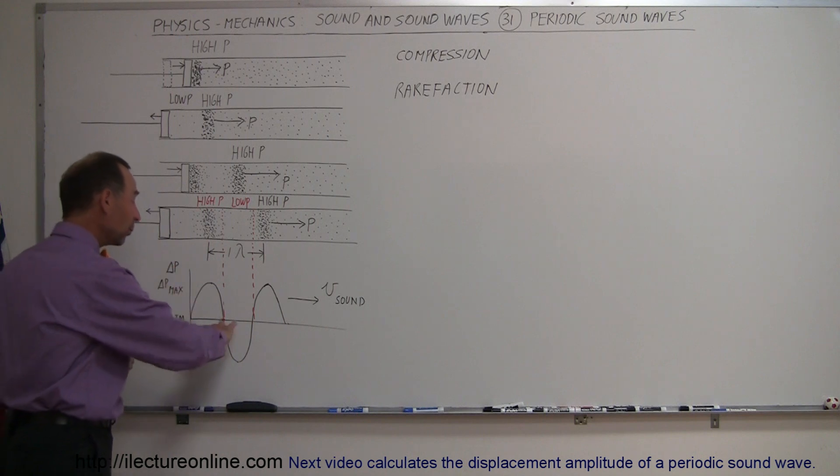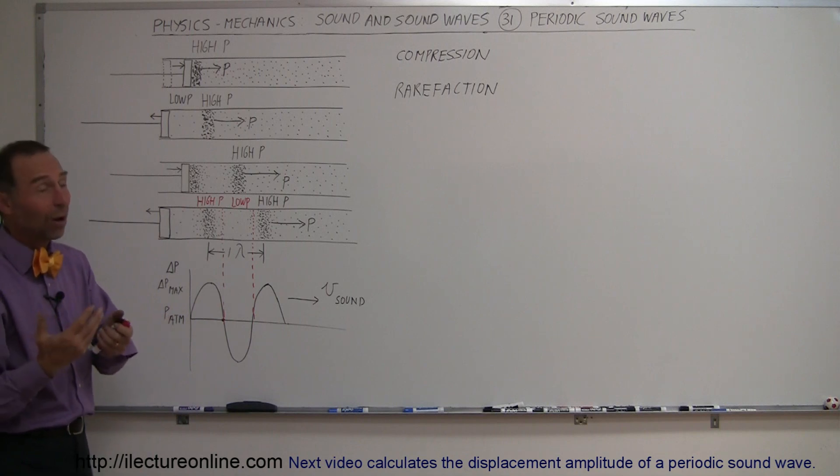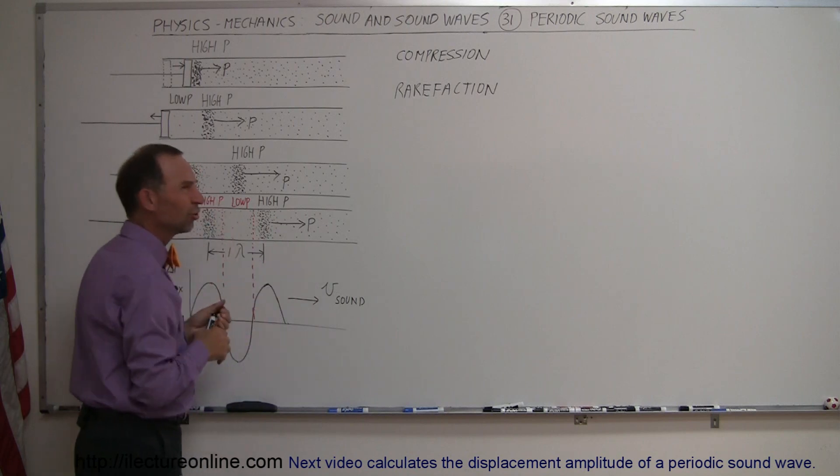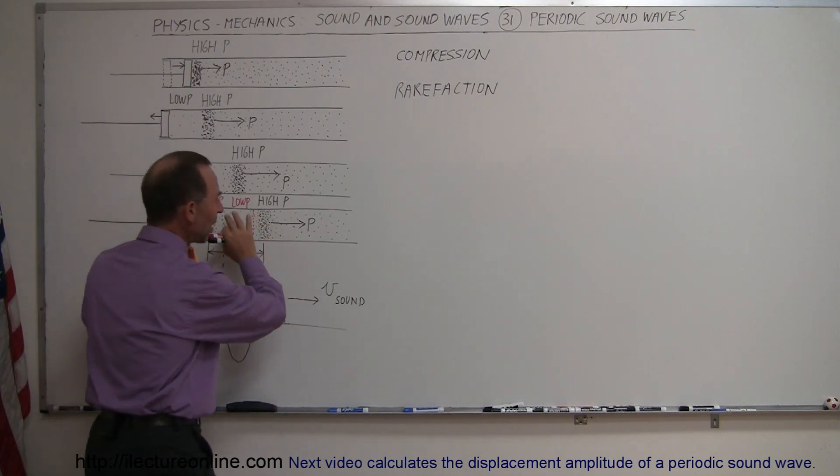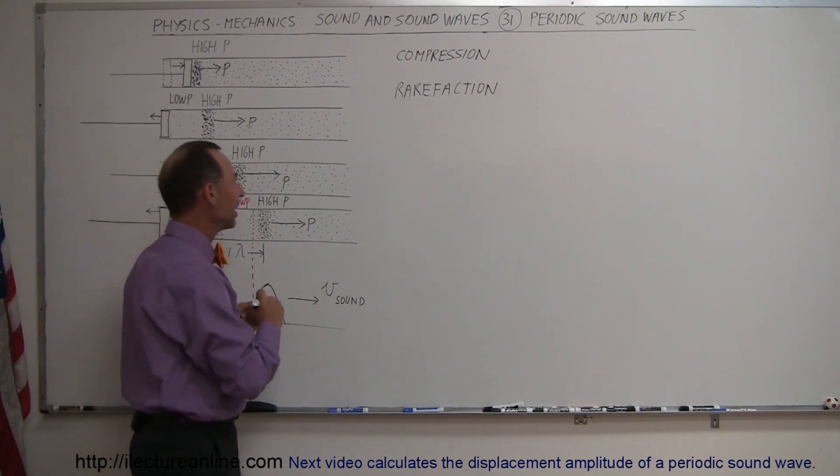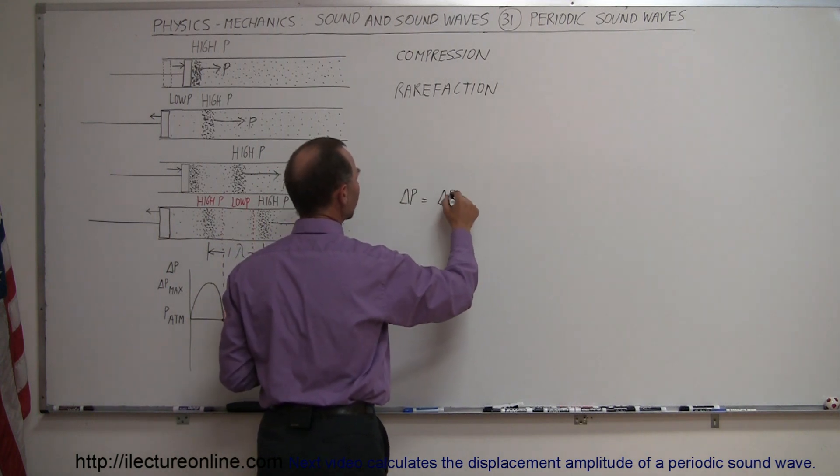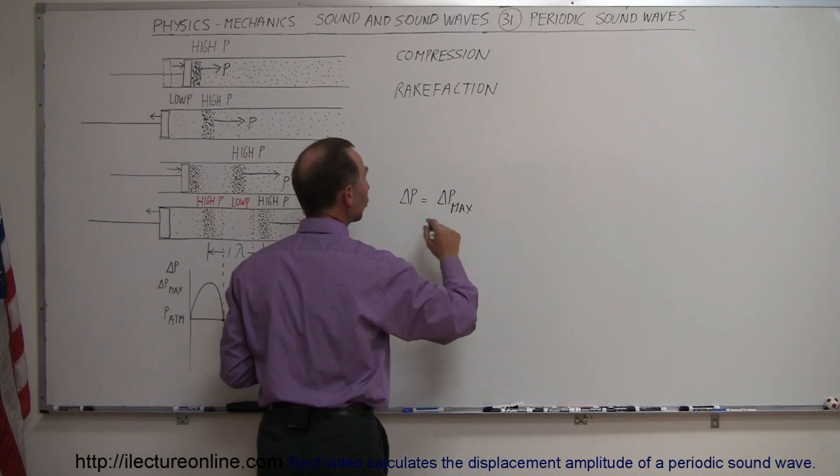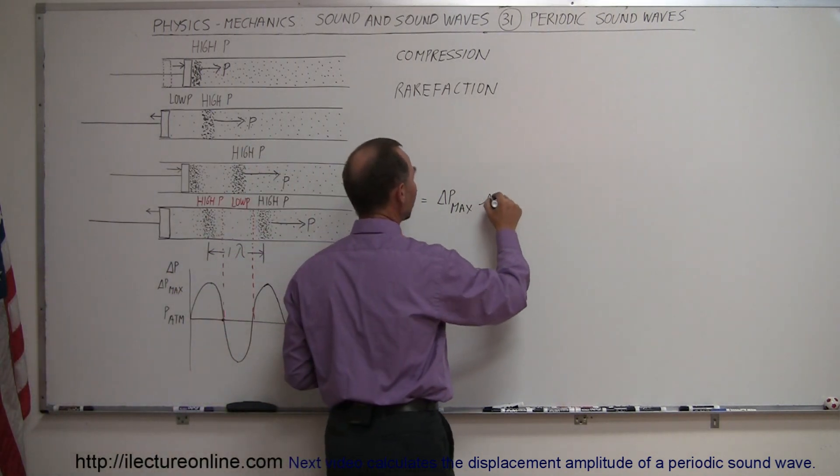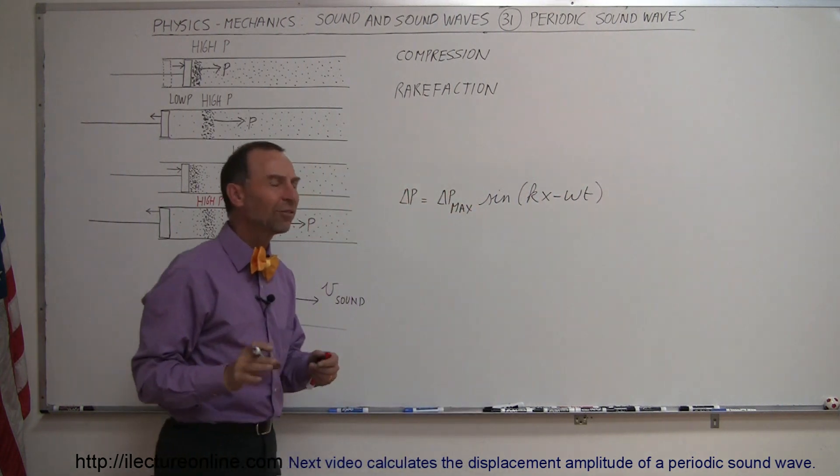Since we can represent the changes in the pressure in the air, which is essentially what a sound wave is—a pressure wave or sets of pressure waves, a set of compressions within the waves moving to the right—we can express that as a function. We can say that the change in the pressure is equal to the maximum pressure, the maximum amplitude, times the sine of kx minus omega t. It's the exact same equation as the waves on a string.